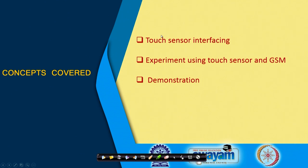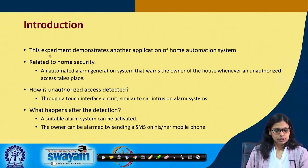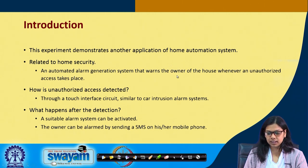The sensor interfacing will be straightforward — we have been working with so many sensors. This experiment uses a touch sensor and GSM module, and finally I will demonstrate. This experiment demonstrates another application of a home automation system that can be integrated for the security aspect. This is related to home security, where an automated alarm generation system alerts the owner of the house whenever unauthorized access takes place.